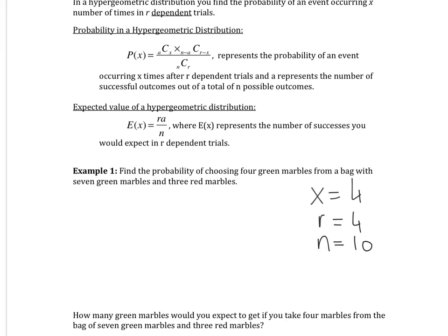So that's 10 since you have 10 marbles in the bag. So seven green and three red. And what else do we need? Our A value is going to be seven because those are your options for a successful outcome. And a successful outcome means choosing a green marble.